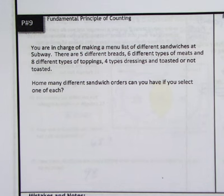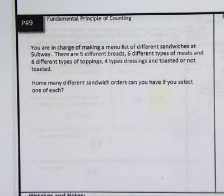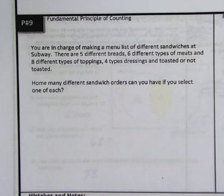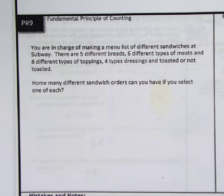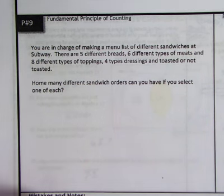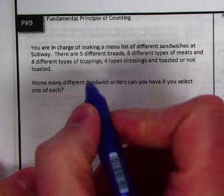Alright, let's take a look at the fundamental principle of counting. This idea is used to multiply together all the possible ways you can arrange different outfits, make different sandwiches, or whatever. The key to this fundamental principle of counting is to multiply — that's basically what you're going to be doing.